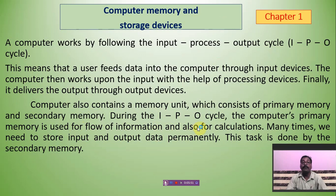During the IPO — Input, Process, Output cycle — what is the data flow and calculation? Many times we need to store input and output data permanently, meaning for future use. This task is done by the secondary memory. Secondary memory is used for storing data permanently.